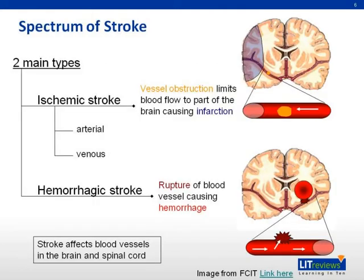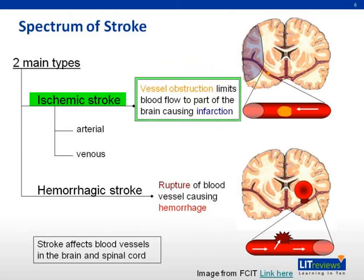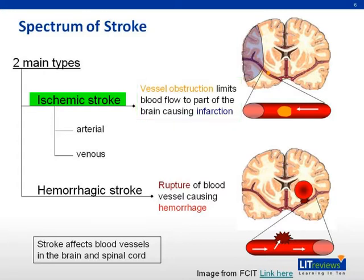There are two main types of stroke. Ischemic stroke, or cerebral infarction, accounts for the majority of strokes, about 80% to 85%. This is caused by interruption of the blood supply to the brain or spinal cord, usually an occlusion by a thrombus or embolus. The cerebral arterial blood supply is usually involved, but uncommonly the venous system is affected due to venous sinus thrombosis.